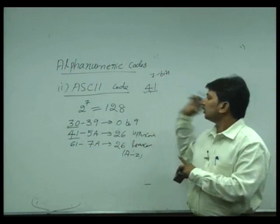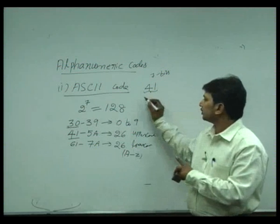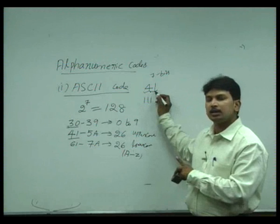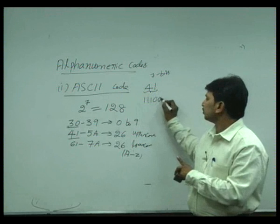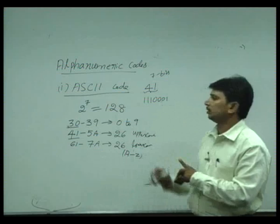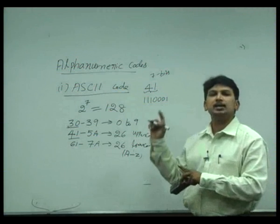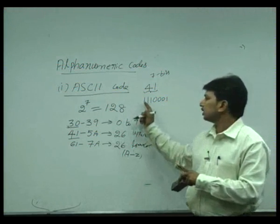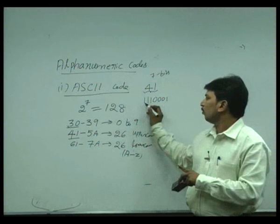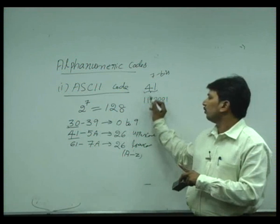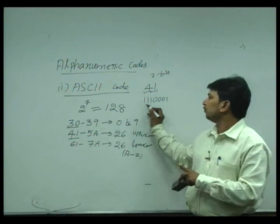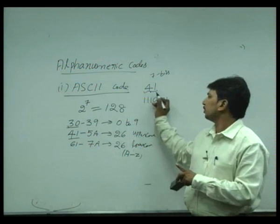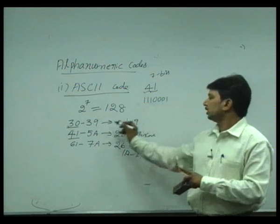So for 4 1 1 1, then 1 is represented as 0 0 0 1. The alphabetical A is represented as 1 1 1. We represented it as 4 1, that is 1 1 1 for the 4 and then the next one is 0 0 1.